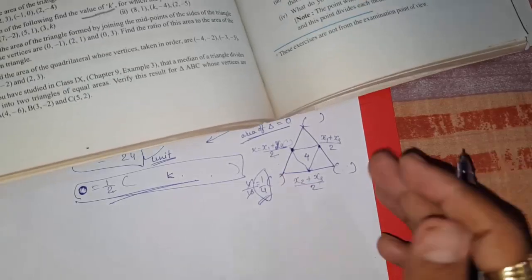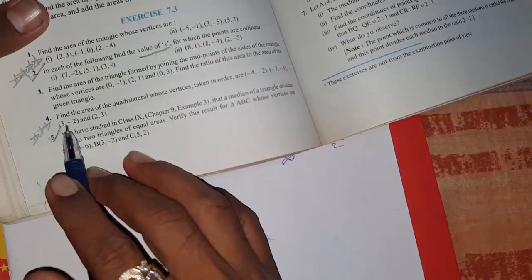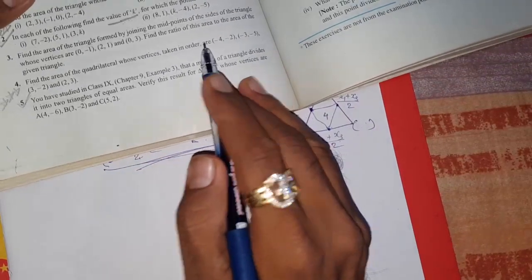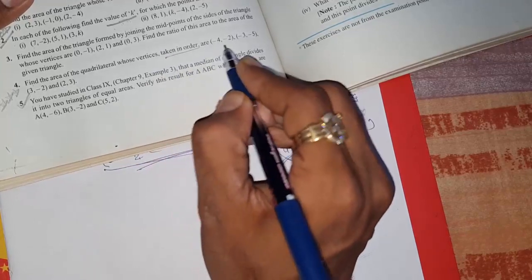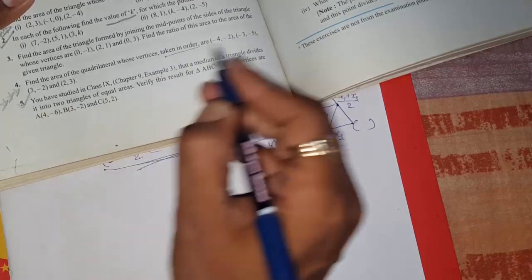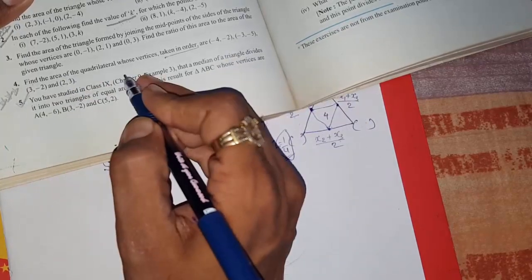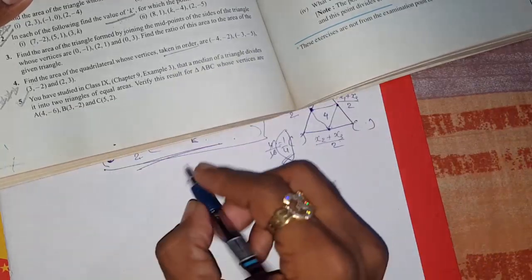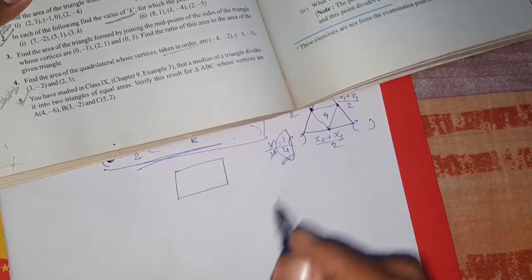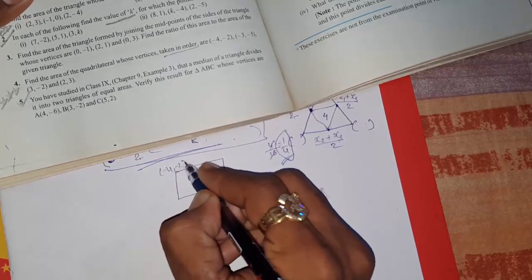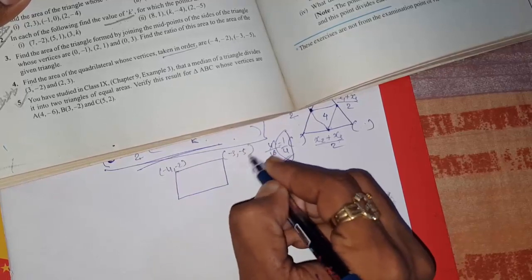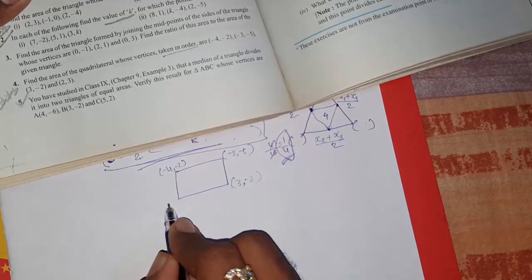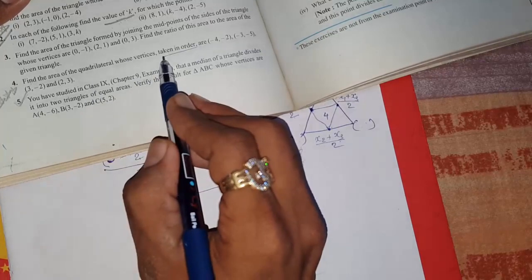The fourth question asks: find the area of a quadrilateral whose vertices are taken in order. You must keep in mind — they said 'taken in order.' You have to arrange the coordinates properly because if they are not arranged in order and you try to find the area, you will get the wrong answer. First draw the quadrilateral, write down all the coordinates in the correct sequence, and make sure the vertices go first, second, third, fourth in order around the shape.